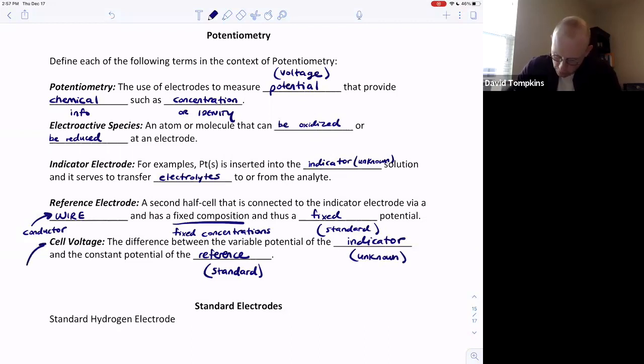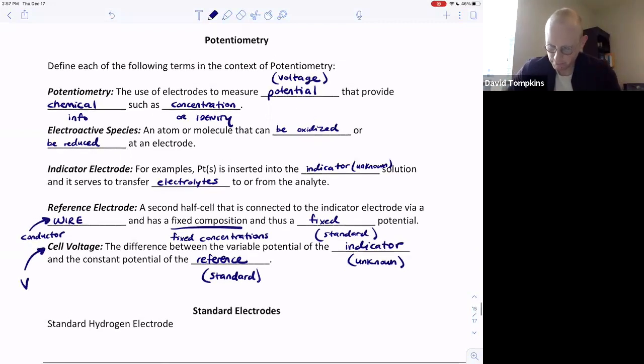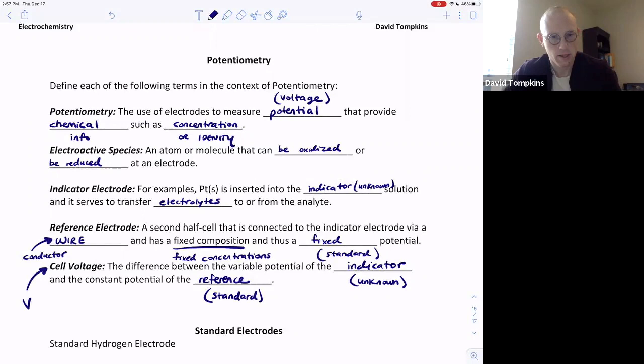That cell voltage will generally be read in volts or millivolts. Once again, this is simply an introduction to the vocabulary associated with potentiometry, and we will see the usefulness of potentiometry in several example problems that we do in subsequent videos as we discuss the various reference electrodes that are common.